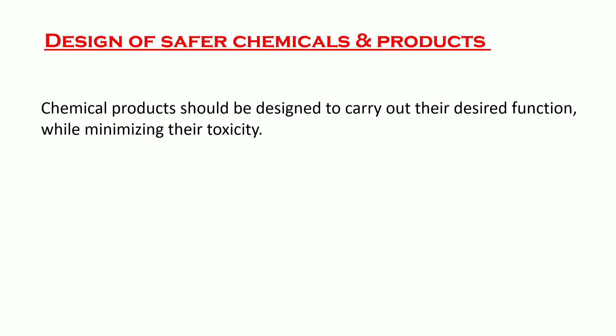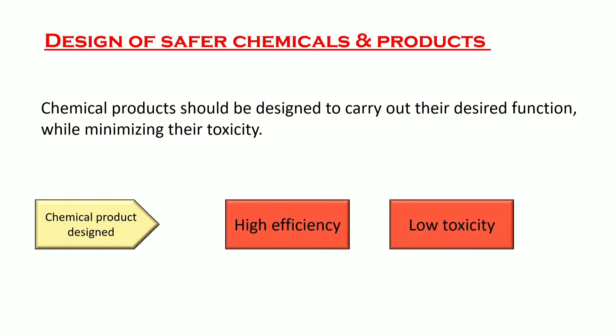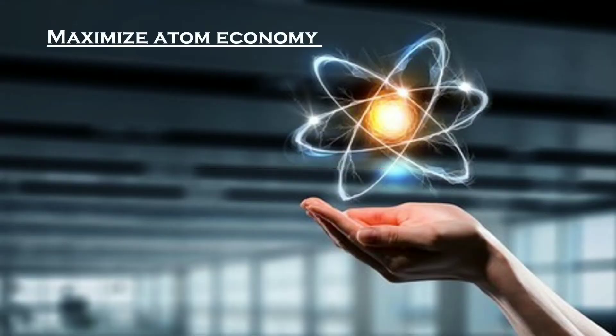For example, medicines bought from a pharmacy must be put on trial to check their toxic effect on humans before being introduced to market. If a drug is toxic, alternatives are prepared such that only the toxicity is reduced, not the efficiency. So we design chemical products to give high efficiency but low toxicity — even replacing an existing product with one of lower toxicity helps the cause.